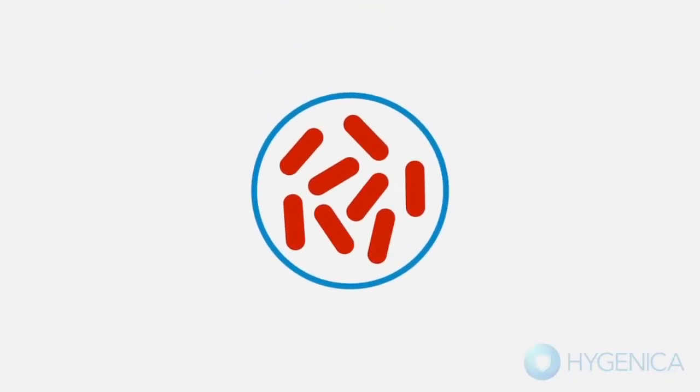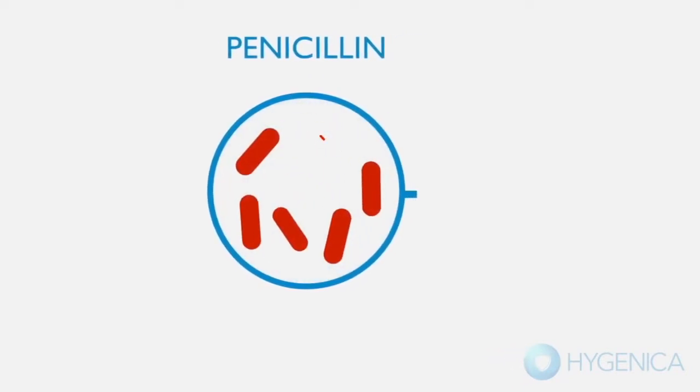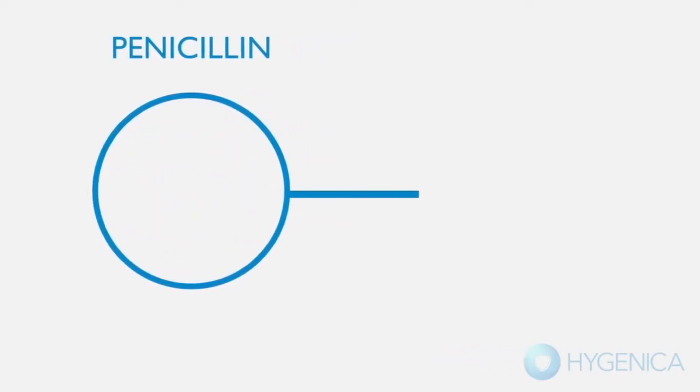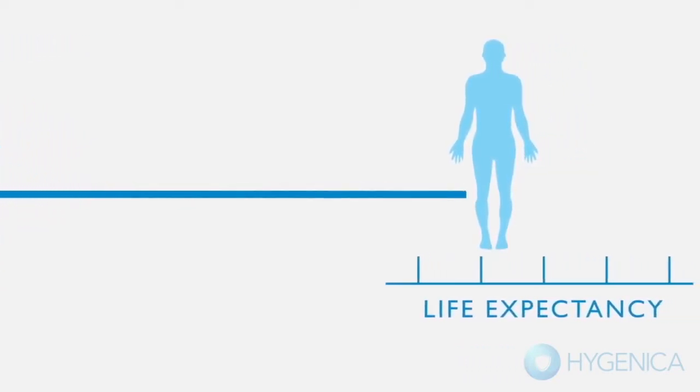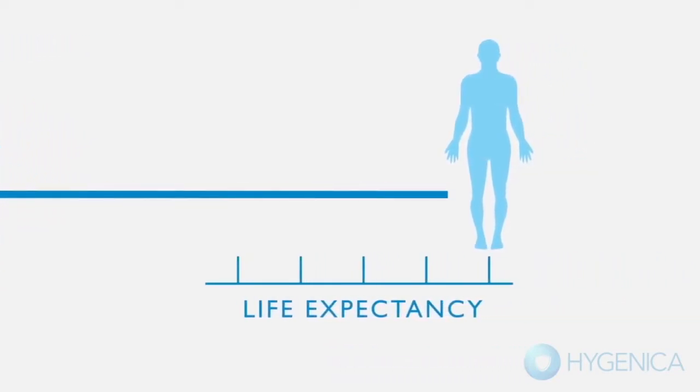Before penicillin was discovered in 1928, up to a third of deaths were caused by bacterial infection. More antibiotics followed the discovery of the miracle drug, saving millions of lives and dramatically increasing average life expectancy.